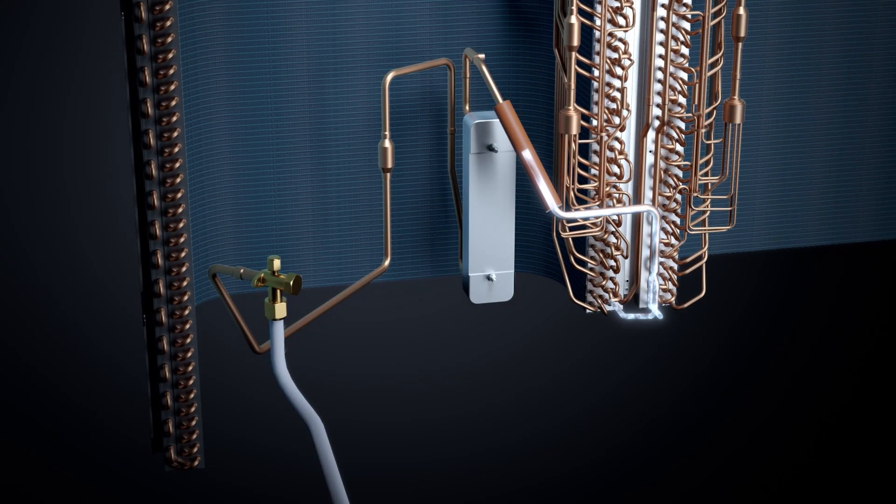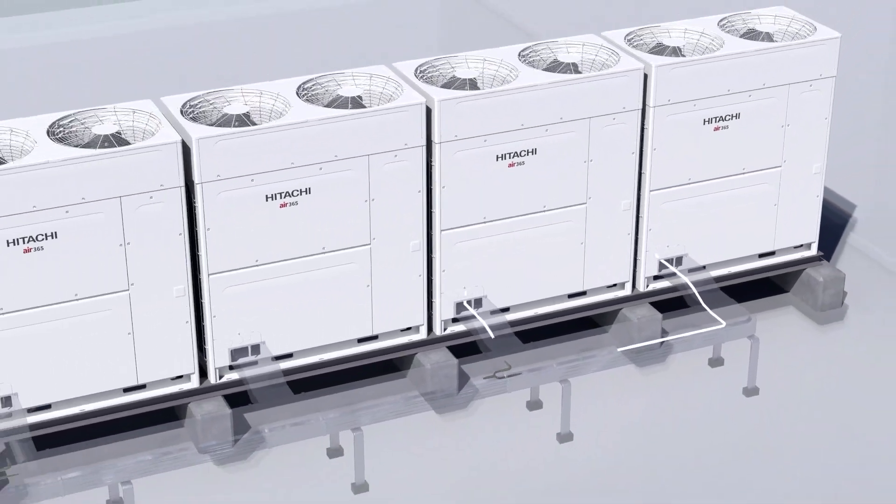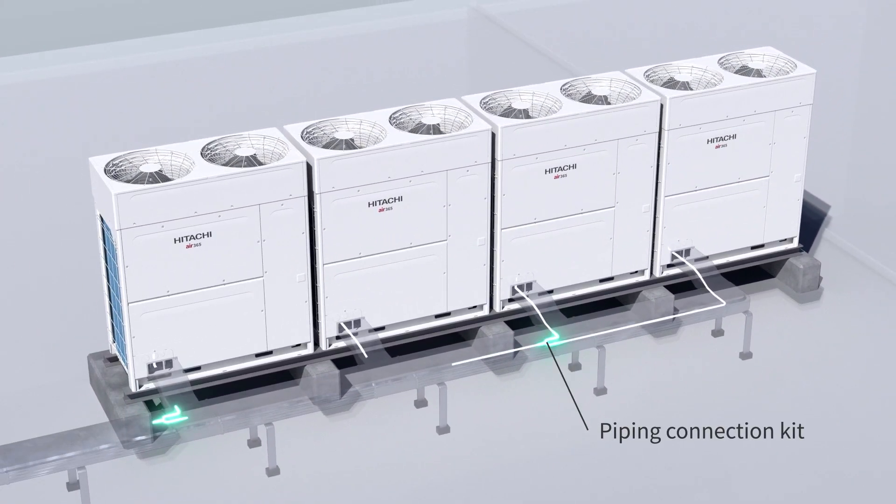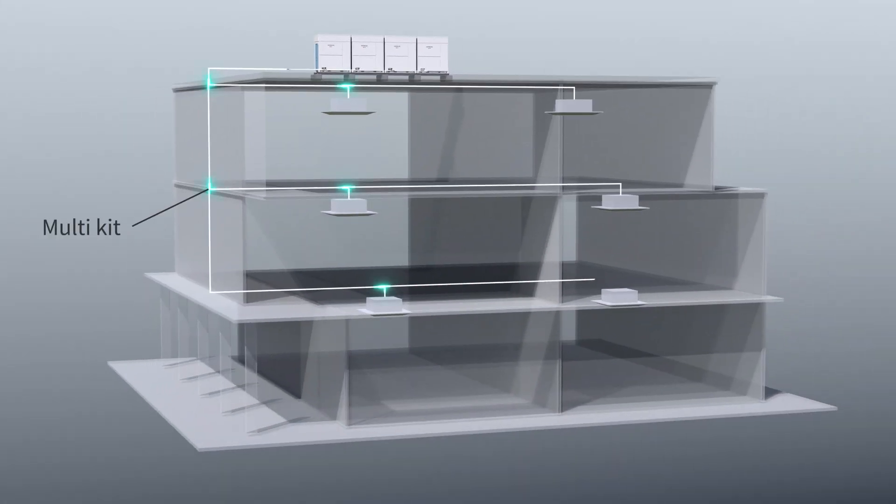The refrigerant going to the indoor units passes through the piping connection kit, which connects multiple outdoor units to ensure the proper distribution of refrigerant across the entire modular system. And then through the multi-kit pipe work, which carries it to indoor units around the building.